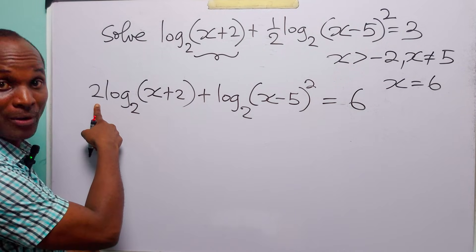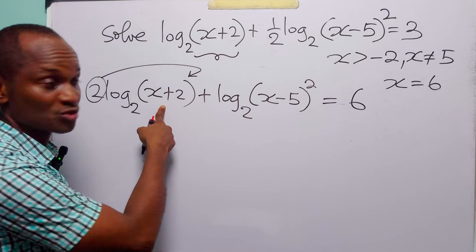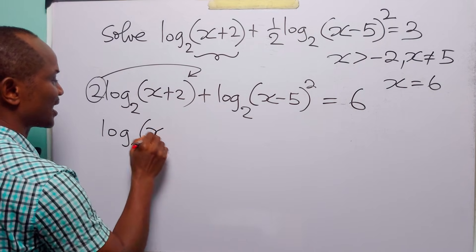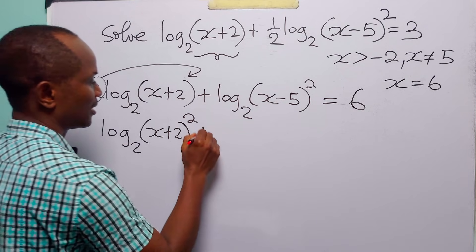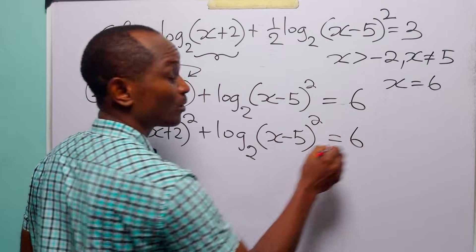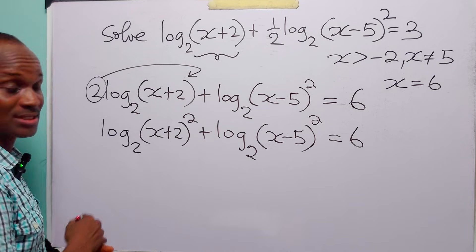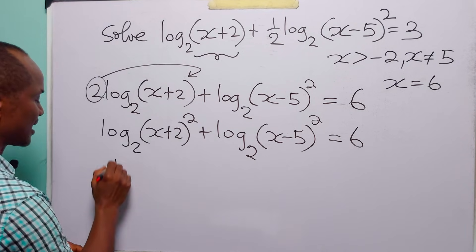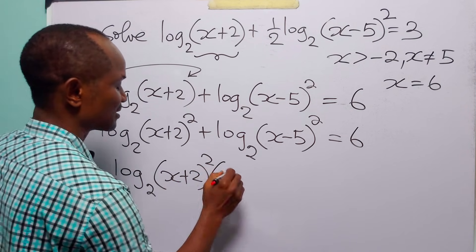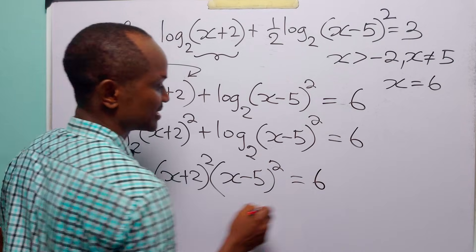We apply the power rule to the first term, taking the multiplier 2 up to become the exponent of (x plus 2). We then have log to base 2 of (x plus 2) squared plus log to base 2 of (x minus 5) squared equals 6. Since we have the sum of logs, we express the left-hand side as log to base 2 of [(x plus 2) squared times (x minus 5) squared] equals 6.